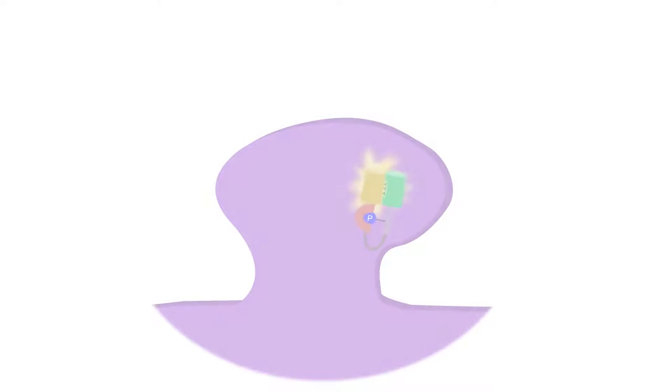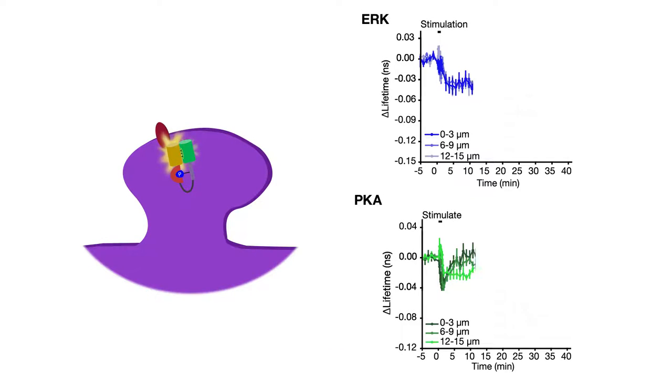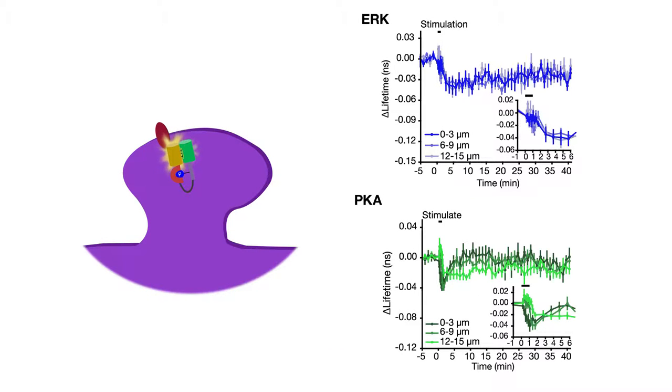The scientists wanted to be sure the apparent spread wasn't caused by movement of the sensors rather than the spread of kinase activity. So they tethered the sensors to an anchor protein in the spine. ERK and PKA activity spread over a similar distance when they used the anchored sensors, confirming they were witnessing the spread of kinase activity.